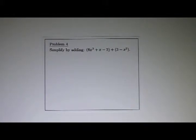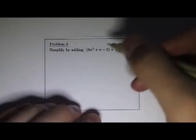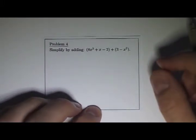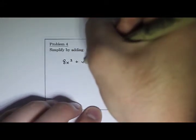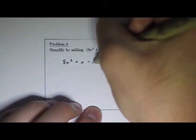We'll do the vertical method. So I'll write the first polynomial. First I'll make sure that x² is the highest power anywhere, and it is. So the first polynomial is 8x² + x - 2.